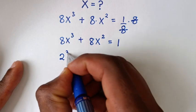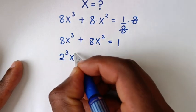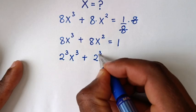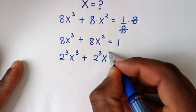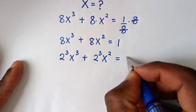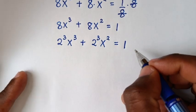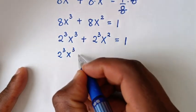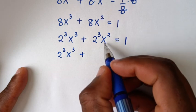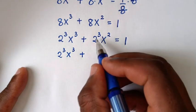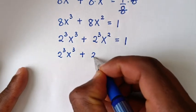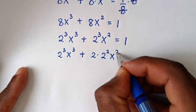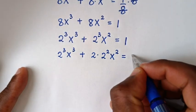In the next step, 8 is the same as 2³, so we have 2³ · x³ + 8 is the same as 2³ · x² = 1. Then 2³ · x³ + 2³ · x² = 1. We note that 2³ is the same as 2 · 2², so we write 2³ · x³ + 2 · 2² · x² = 1.